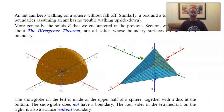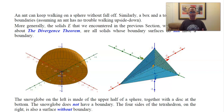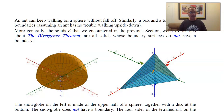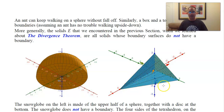In our last video we talked about the divergence theorem, where we related the surface integral through the surface of a solid to a triple integral on the solid. Those surfaces that make up the boundary of the solid are examples of surfaces that do not have a boundary — even though a snow globe has an edge and a tetrahedron has six edges, those are not boundaries. An ant can keep walking around the surfaces of a tetrahedron without falling off.